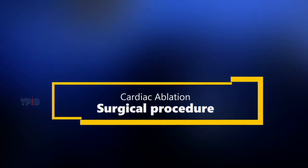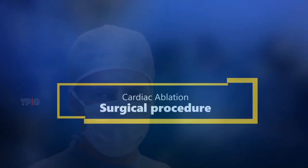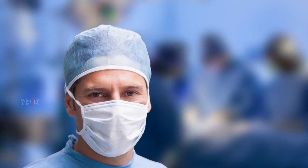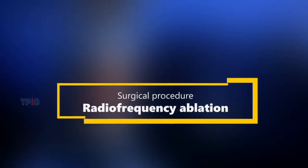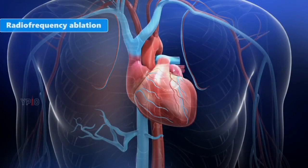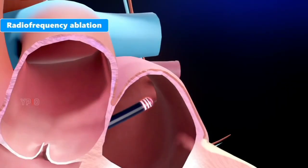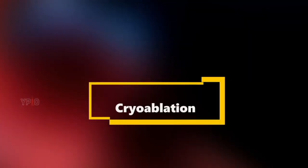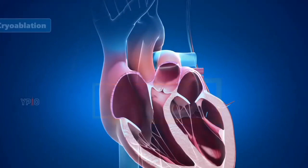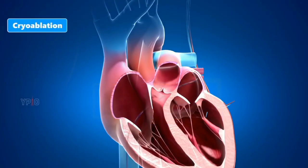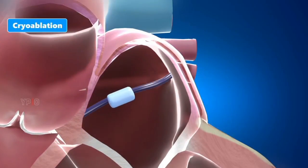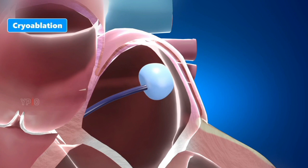Cardiac ablation can be performed by two methods. Radiofrequency ablation utilizes catheters to convey radiofrequency energy, similar to microwave heat, to destroy the problematic heart tissue. Cryoablation utilizes a single catheter to deliver a balloon tipped with a freezing material to cause a scar in the problematic heart tissue.